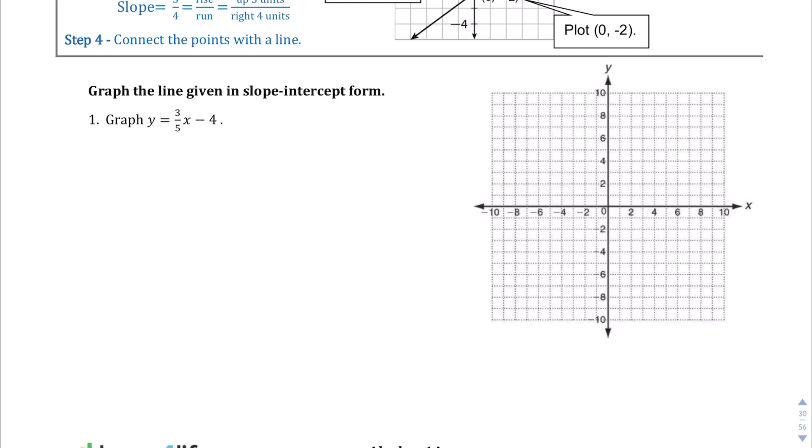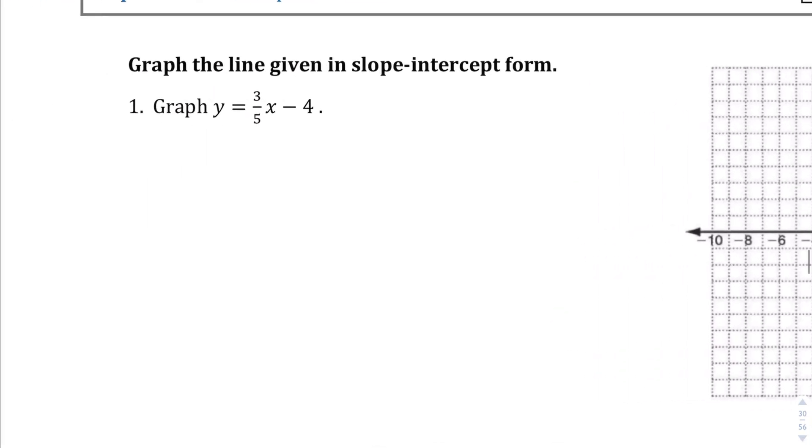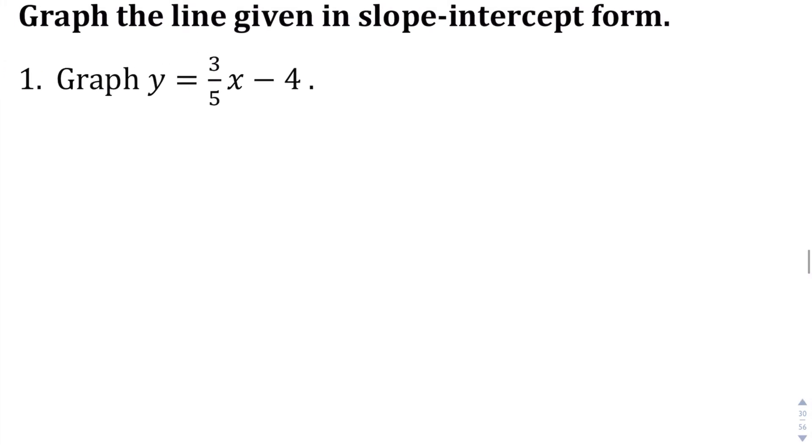We are just going to jump into the first problem here where we have this equation. Let's take a look at the equation first, and then we'll graph it afterwards. There's an equation here, and this is the slope. It's in slope-intercept form, so this is the slope, and this is the y-intercept, hence the name slope-intercept form.